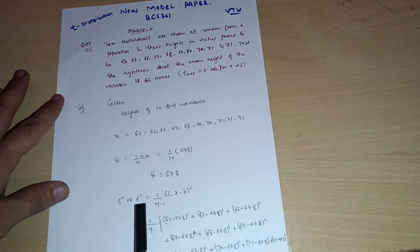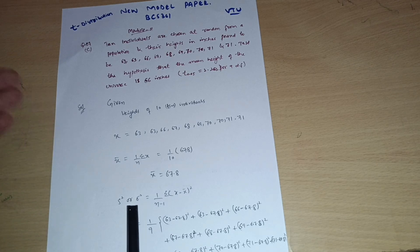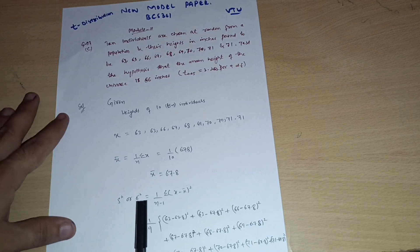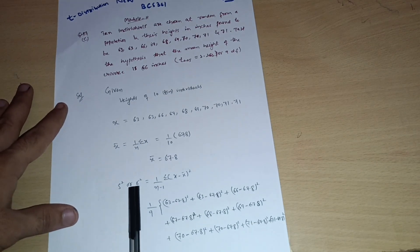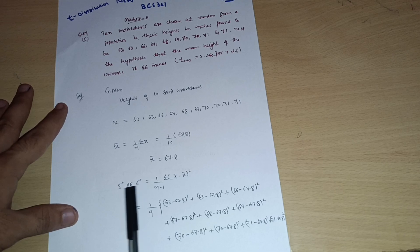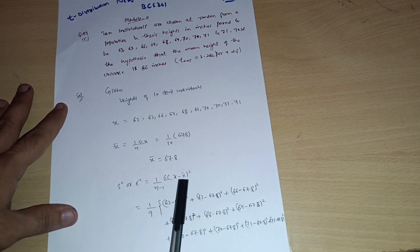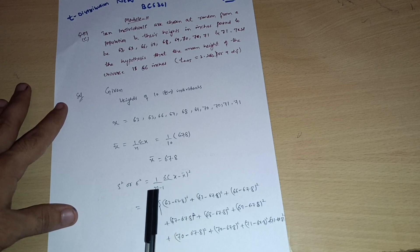In this particular formula, you should remember one thing. Not actually remember, you will be provided with the handbook, it is given there. So s square, or sometimes it is denoted by sigma square, that is your variance. So formula is 1 upon n minus 1 summation of x minus x bar whole square.